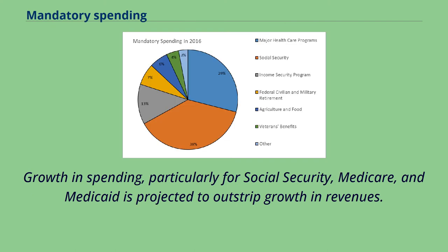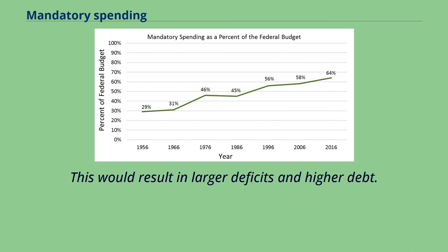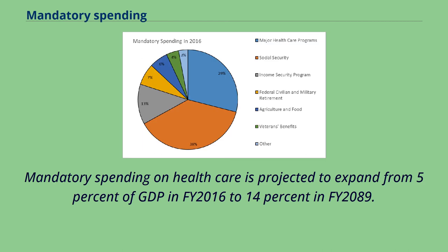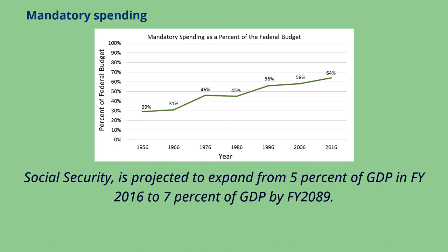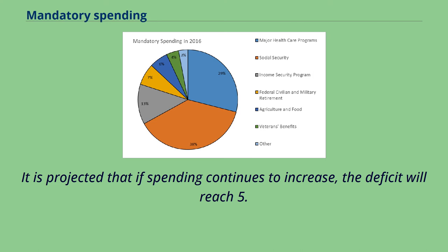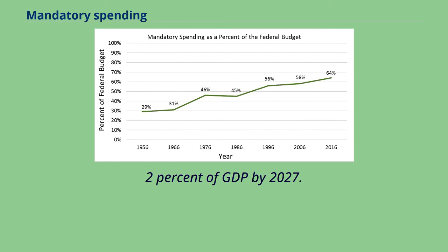Growth in spending, particularly for Social Security, Medicare, and Medicaid, is projected to outstrip growth in revenues, resulting in larger deficits and higher debt. Mandatory spending on healthcare is projected to expand from 5% of GDP in FY 2016 to 14% in FY 2089. Social Security is projected to expand from 5% of GDP in FY 2016 to 7% of GDP by FY 2089. It is projected that if spending continues to increase, the deficit will reach 5.2% of GDP by 2027.